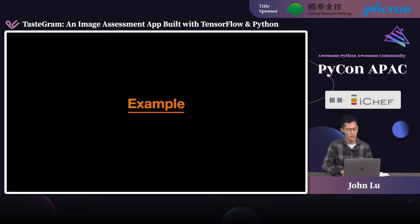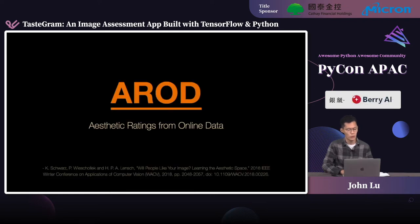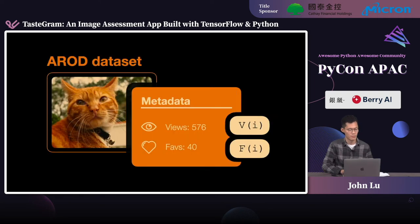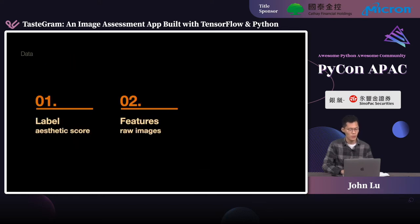To be concrete, we step back to our example. First, we retrieve the dataset called the Aesthetic Ratings from online data, AADB. The dataset contains photos downloaded from the Flickr website. Each image file contains metadata such as the number of views of the image and the number of favorites. We can derive the aesthetic score of the image as our label by using the metadata. We'll preprocess the dataset to derive the label and features as our training examples.